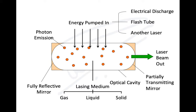A laser consists of a tube containing a lasing material, and based on this material we name the laser — for example, carbon dioxide laser or neodymium YAG laser. The lasing material can be gas, liquid, or solid. The two ends have reflective mirrors, but one side is a partially transmitting mirror where the beam exits. Energy is pumped into the lasing medium as electrical discharge, a flash tube, or even another laser.